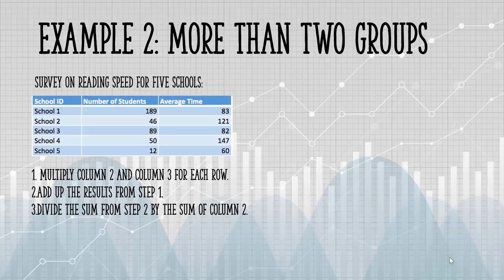So if I put this into a calculator, I'm going to multiply 189 by 83, I'm going to add 46 times 121, and add 89 times 82.